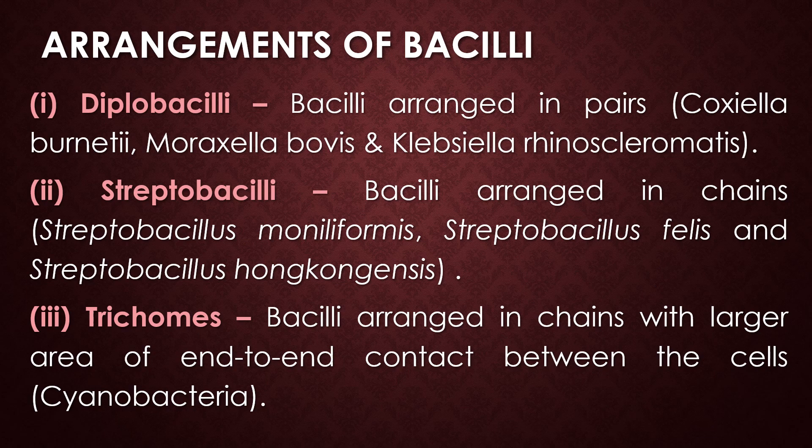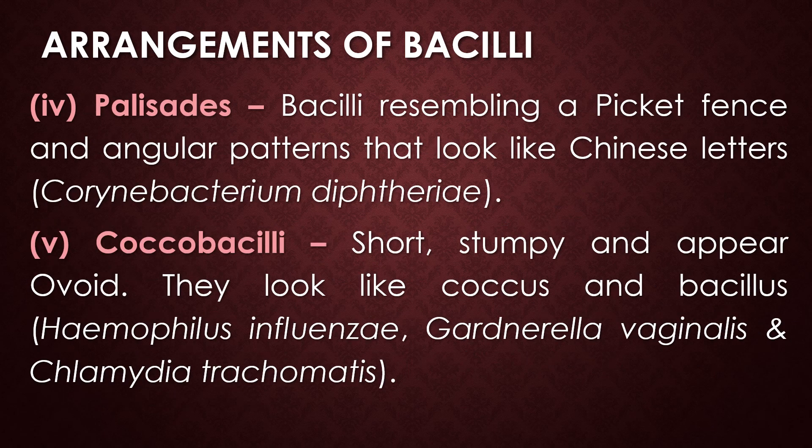The third type of arrangement of bacilli is trichomes — bacilli arranged in chains with a larger area of contact between the cells. The well-known example for trichomes is the photosynthetic cyanobacteria. The fourth type of arrangement of bacilli is palisade — bacilli resembling a picket fence type of arrangement or Chinese letter arrangement. The well-known example is Corynebacterium diphtheriae, widely known as the causative agent of diphtheria.